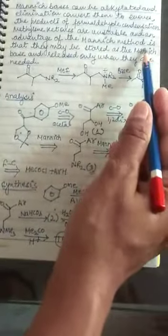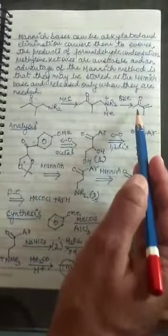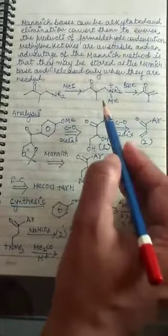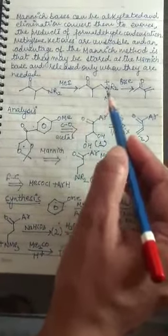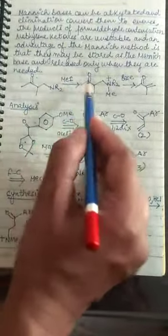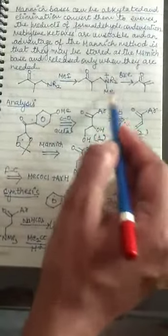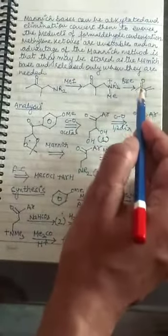An advantage of Mannich method is that we can store them as the Mannich bases and whenever these are required they can be produced. It means that we can store the alkylation product and then we can do the elimination and the unstable product we can generate when it is needed.